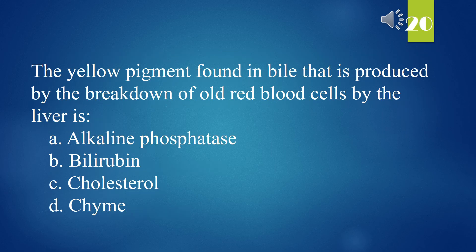The yellow pigment found in bile that is produced by the breakdown of old red blood cells by the liver is: A. Alkaline phosphatase. B. Bilirubin. C. Cholesterol. D. Chyme. The answer is B. Bilirubin.